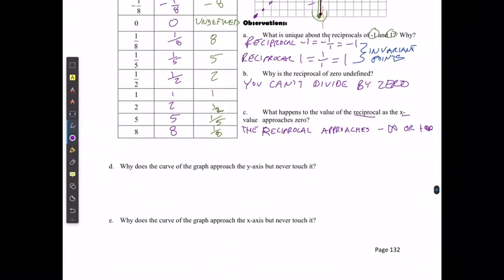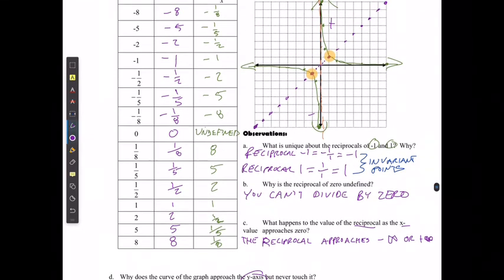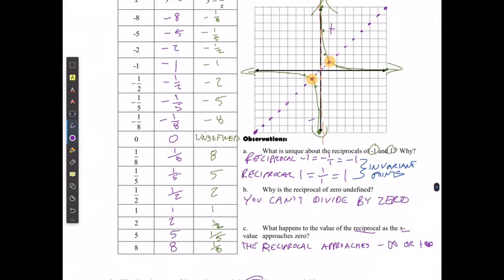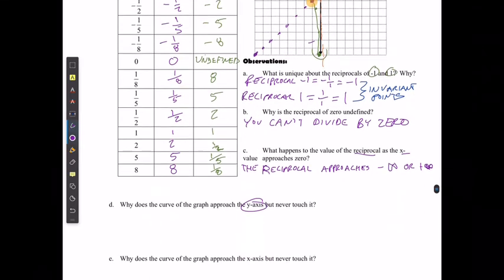Why does the curve of the graph approach the y-axis but never touch it? So you can see that it's the same thing, where it's going to try and get closer and closer to the y-axis, but it's never actually going to touch that point.